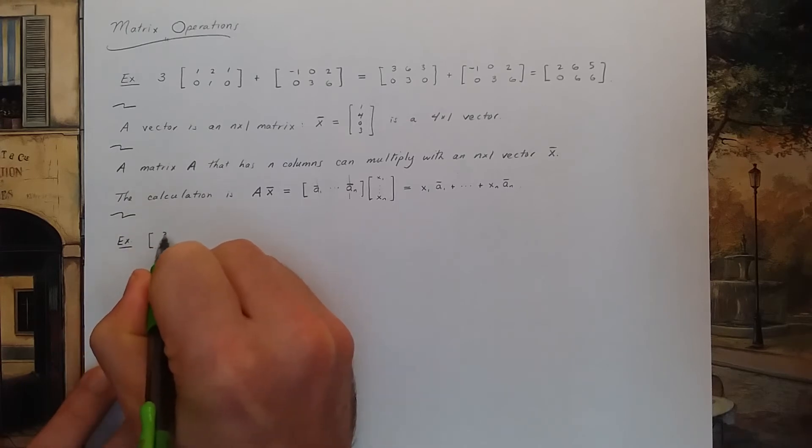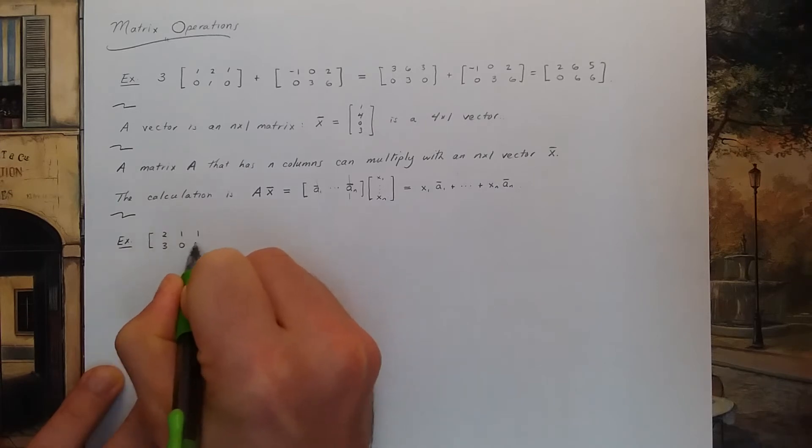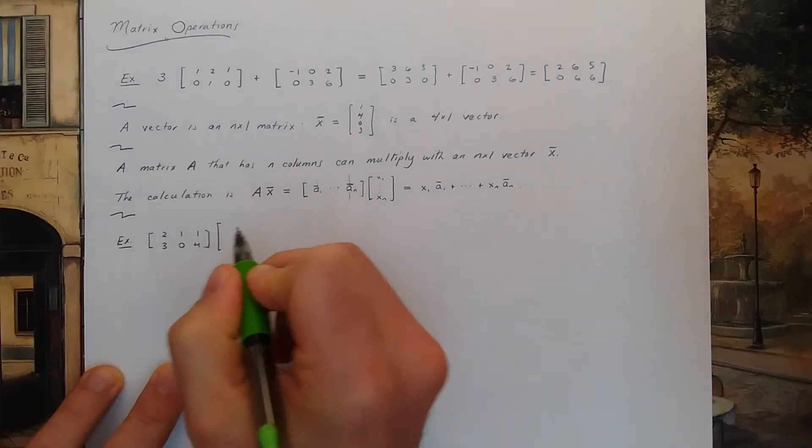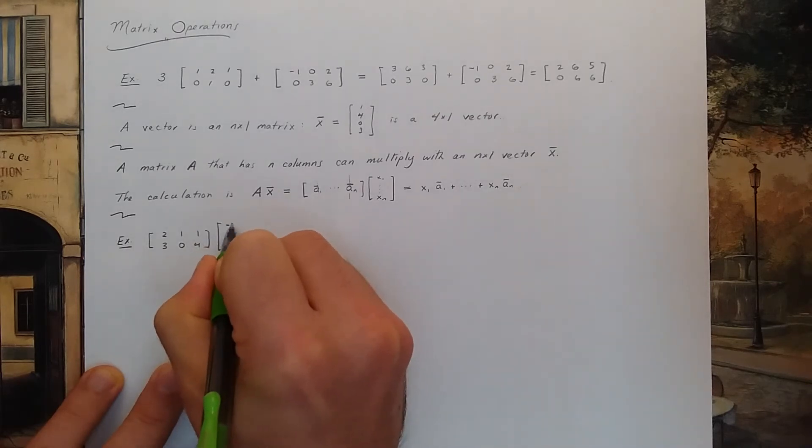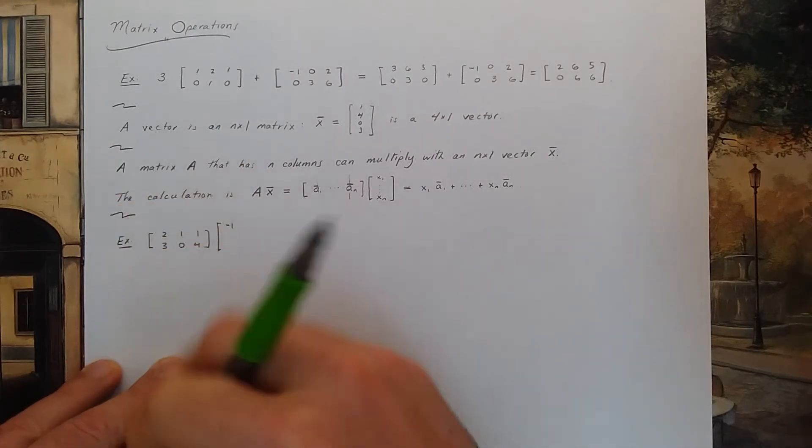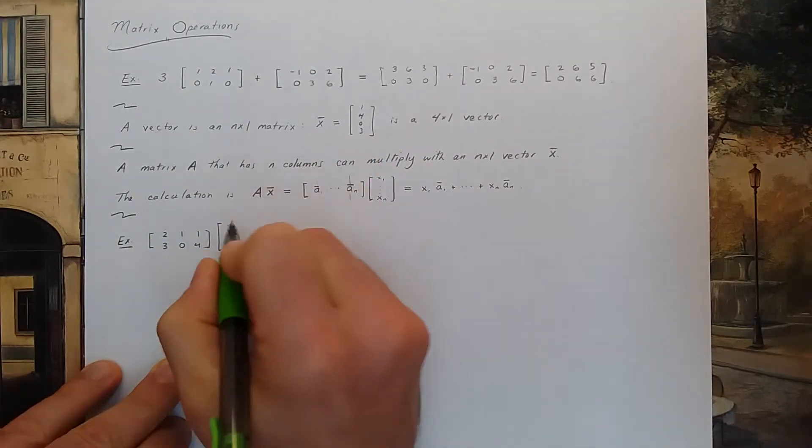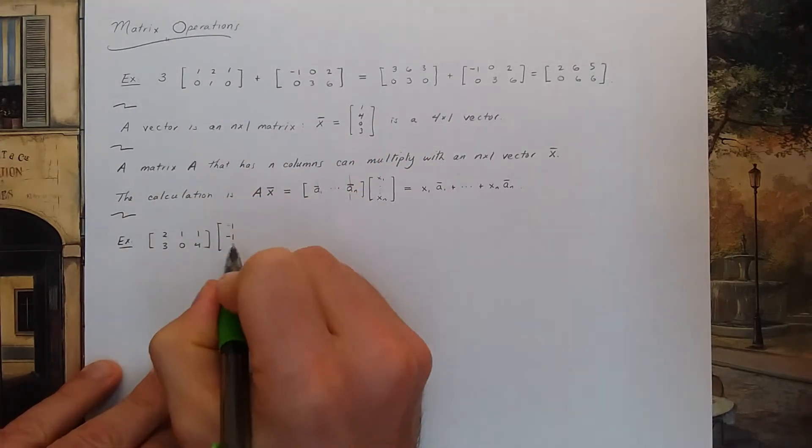I can multiply 2, 1, 1, 3, 0, 4. That's a matrix that has three columns. And I can multiply that with the column vector. Let's say 1, 1, negative 1.